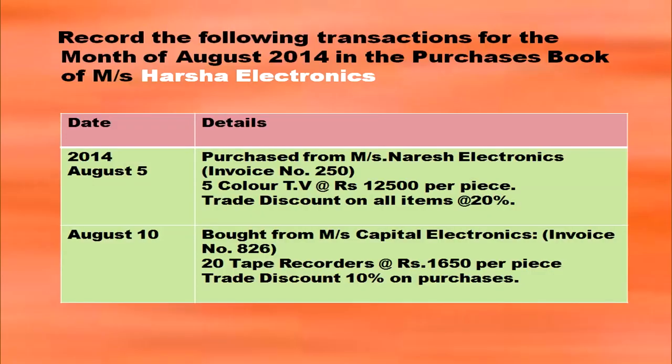Record the following transactions for the month of August 2014 in the purchases book of Messrs Harsha Electronics. On August 5th, purchase from Messrs Naresh Electronics: 5 color TV at rupees 12,500 per piece, with trade discount on all items at 20 percent. On August 10th, bought from Messrs Capital Electronics.